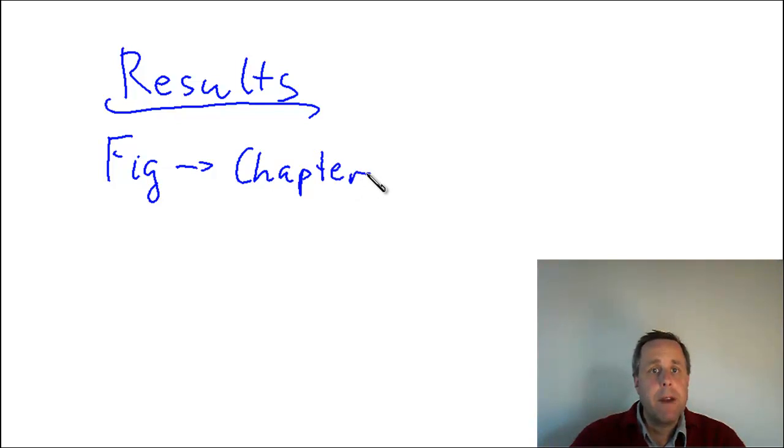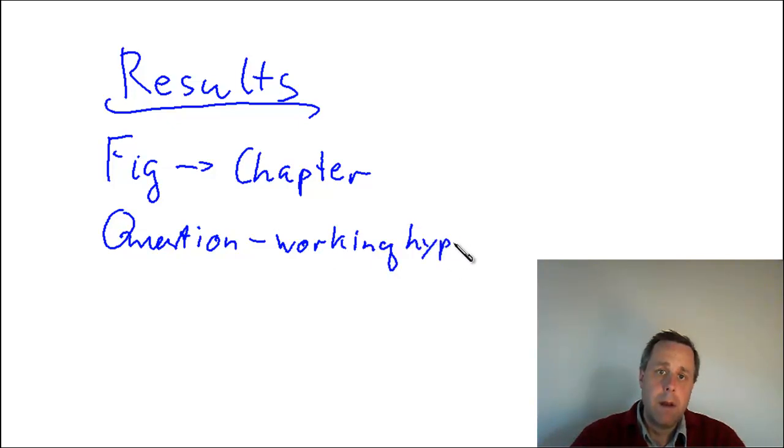That's easy enough, and the only point is how to set up such a chapter. What you normally do is first write down a question that you have been addressing in that particular chapter and figure. It's a question, and sometimes that question would translate into a working hypothesis. Basically, you tell the reader what you have been trying to learn in that chapter.